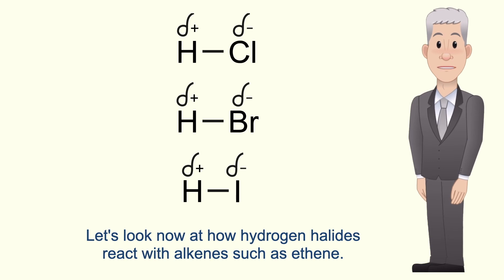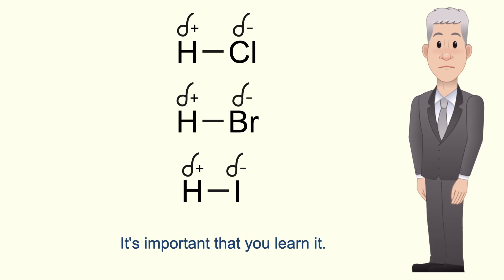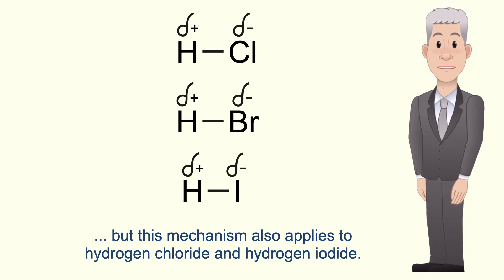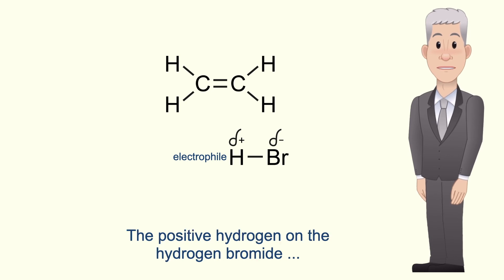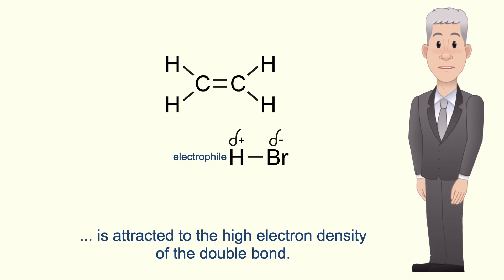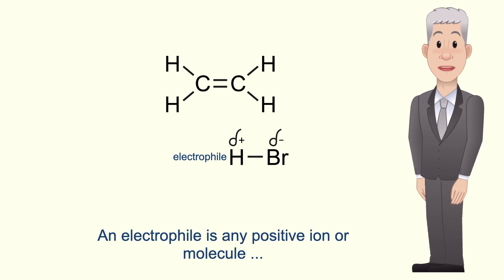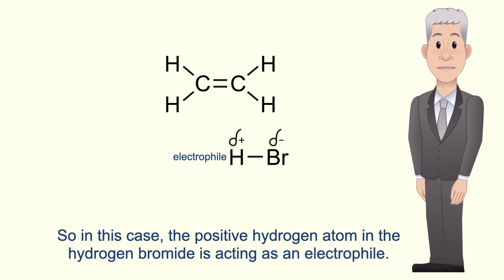Let's look at how hydrogen halides react with alkenes such as ethene. I'm going to show you the reaction mechanism for this and it's important that you learn it. We're going to look at hydrogen bromide, but this mechanism also applies to hydrogen chloride and hydrogen iodide. First, the hydrogen bromide molecule approaches the alkene. The positive hydrogen on the hydrogen bromide is attracted to the high electron density of the double bond — scientists refer to this as an electrophile. An electrophile is any positive ion or molecule which is attracted to a region of high electron density.